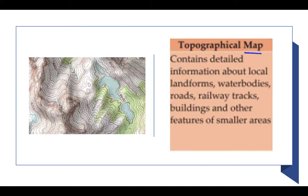The fourth type is a topographical map. If any map describes detailed information about water bodies, landforms, railway tracks, occupations, or settlements — meaning it shows detailed information about an area — that is called a topographical map. We use topographical maps for detailed information.